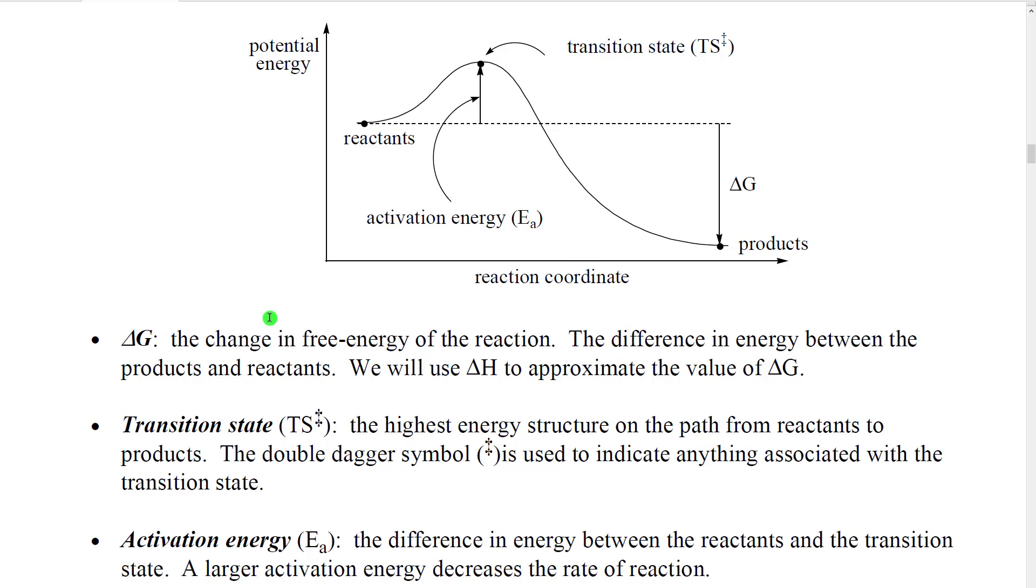Now we typically use a special symbol to represent the transition state. We put this thing, this is called a double dagger. When I draw it, I just draw a line, two crosses.